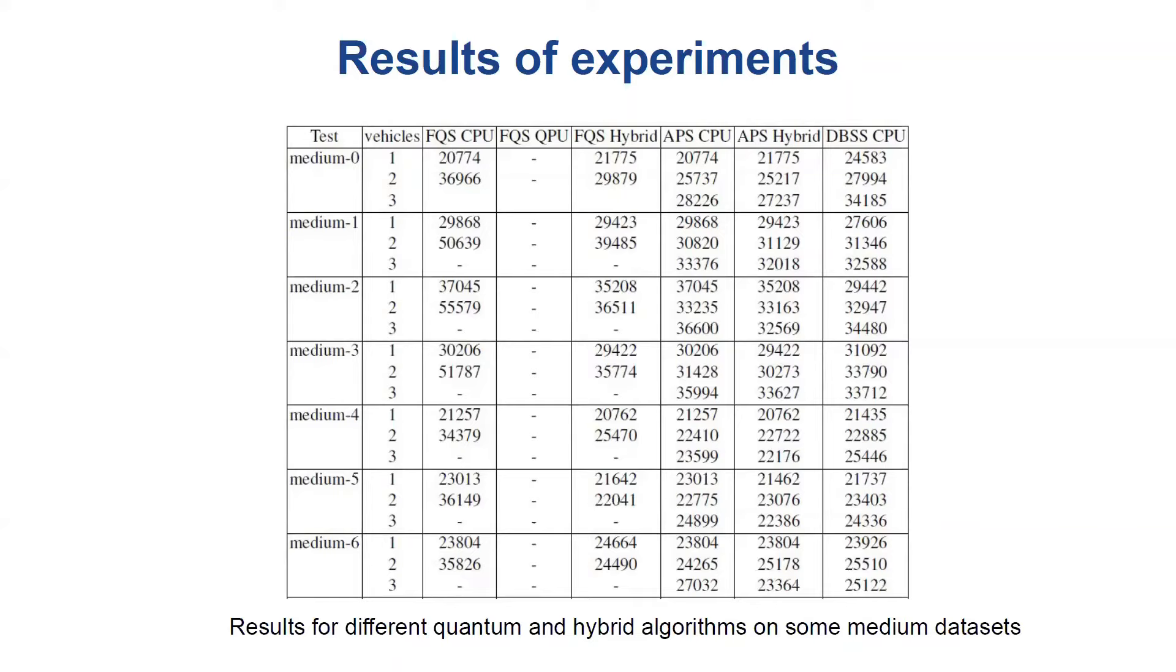An interesting case is the average partition solver. In most cases, the results found using APS were better than the results found by full QUBO solver. We can also notice that the differences between results for three vehicles and results for two vehicles generated by APS are lower than the differences between results for two vehicles and one vehicle generated by FQS.